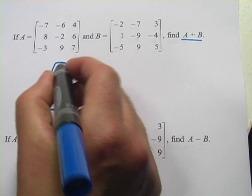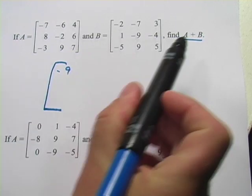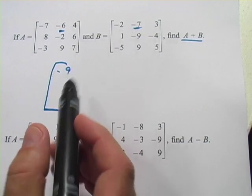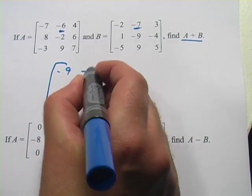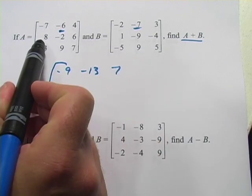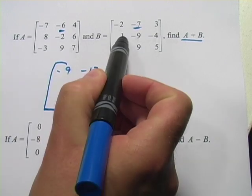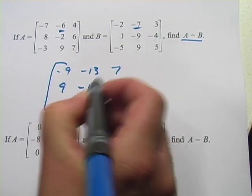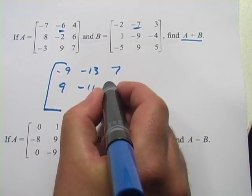Negative 7 plus negative 2 is negative 9, and I'm just going to go right across the rows, so the next element would be this negative 6 and negative 7. Add those together, you get negative 13, 4 and 3 is 7. Now we'll go down to the second row here: 8 and 1 is 9, negative 2 and negative 9 is negative 11, 6 and negative 4 is 2.